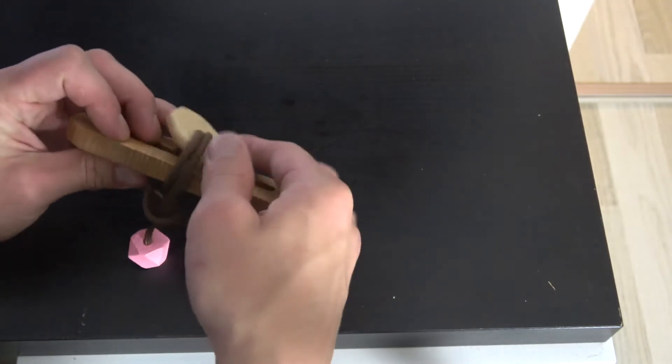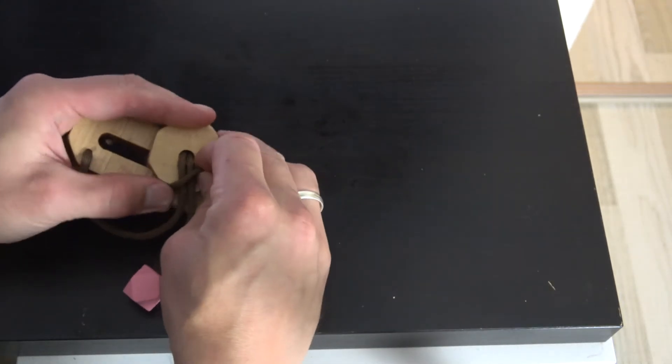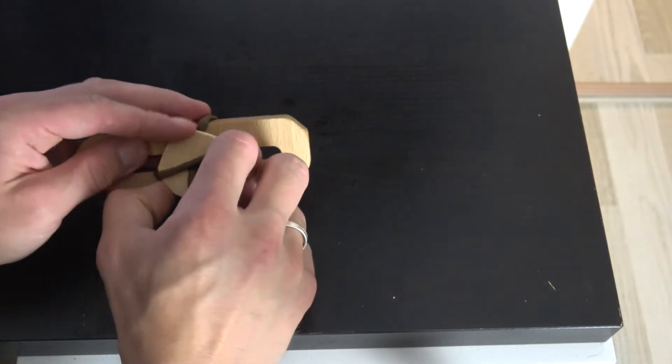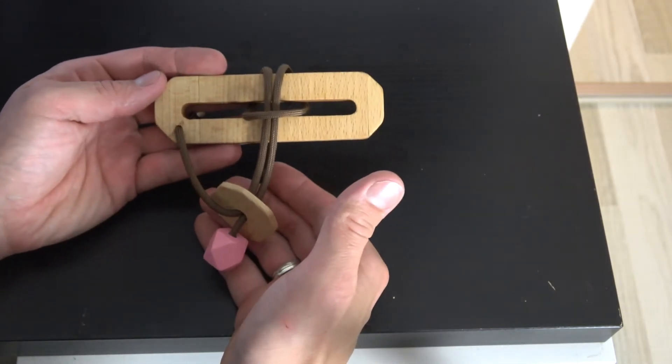And to get back to the original state, take your ring and let it slide through this loop too. Can be a bit tight, but there we go, reassembled.